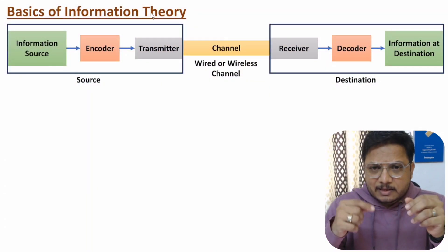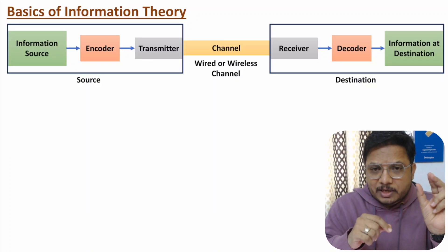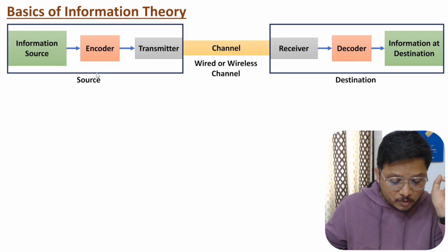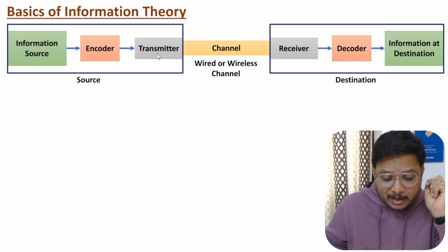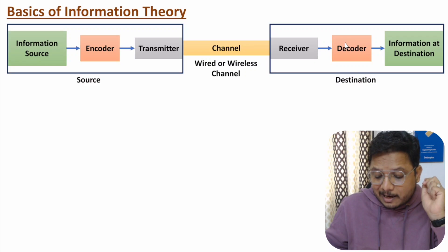In a communication system, what we do is we transmit information from source to destination. Here we have a source, and with source we have information that is getting encoded first, and then it is given to the transmitter. The transmitter will be forwarding information on a channel. This channel can be wired or wireless. And via the channel, the receiver will be receiving information. After that, we will be decoding it, and at last information is there at the destination side.